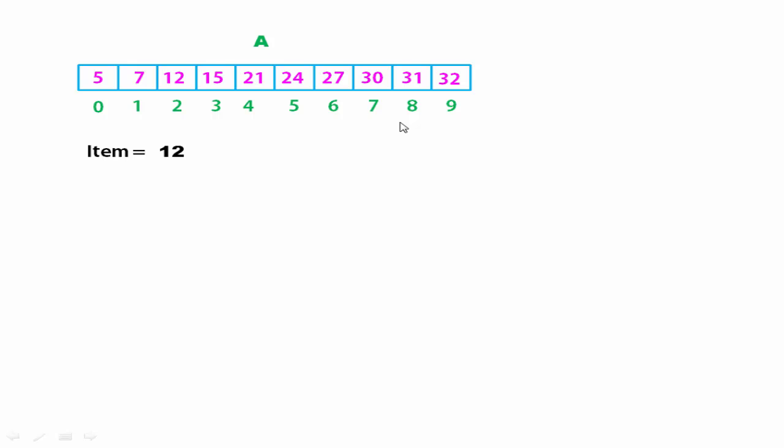We check whether 12 is present in this array or not. If 12 is present, the search is successful and we point out the location or index where it is stored. In Binary Search, we compare the item with the middle element of the array. We calculate the middle element as mid = (start + end) / 2. Start indicates the starting index and end indicates the ending index. Initially start is 0 and end is 9, so mid = (0 + 9) / 2 = 4.5. We consider only the integer part, which is 4, so the element at index 4 is the middle element.